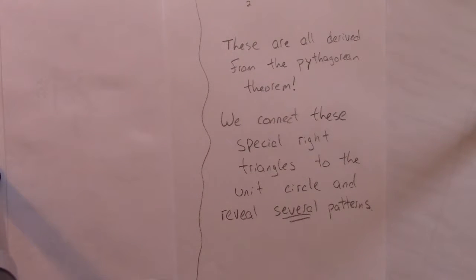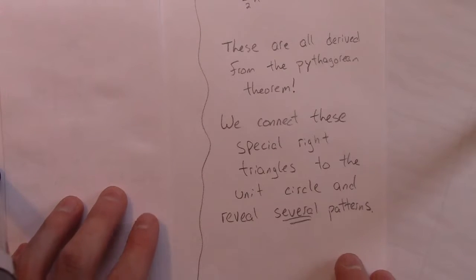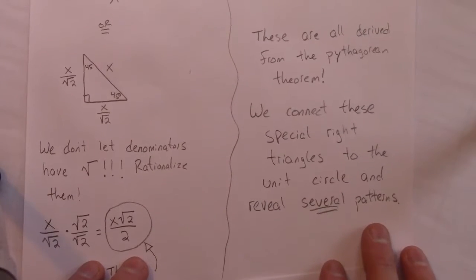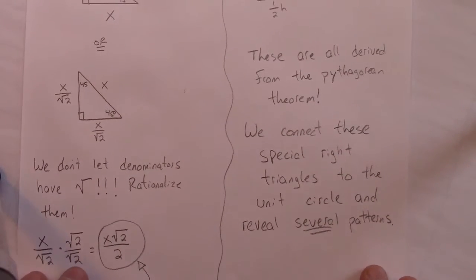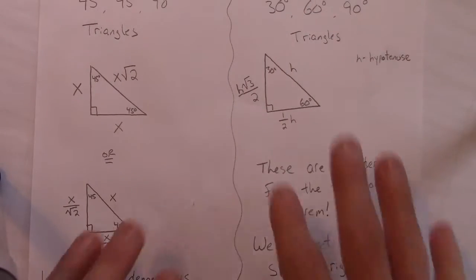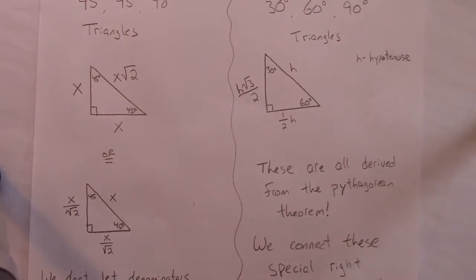And we connect these to special right triangles to reveal several patterns. There's all kinds of little patterns. There's ways to remember the unit circle. But those numbers, the square root of 3 over 2, one half, and root 2 over 2, all show up in the unit circle. And they're just going to repeat over and over and over again. And that's where they're coming from. So we'll see why between this combination and SOHCAHTOA in a second.